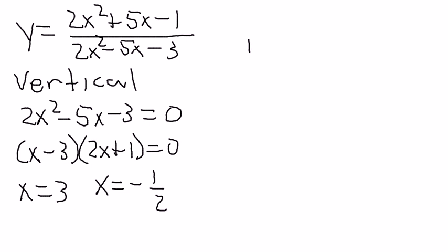For your horizontal asymptote, since the power in the denominator and the power in the numerator are equal to each other, you have a horizontal asymptote at 2x squared over 2x squared, or just 1. So a horizontal asymptote at y equals 1.